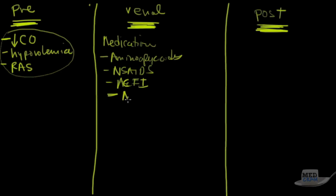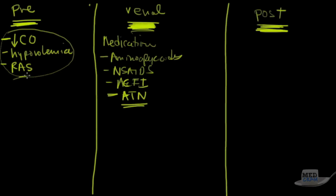Acute tubular necrosis (ATN) is another cause of renal failure. If there's not enough blood reaching the kidney initially, you have a pre-renal situation, but if that lasts for hours or a day, the cells can die from lack of oxygen — that's ATN. Usually this is reversible, but a key clinical question is distinguishing true renal failure from pre-renal failure, which we'll address.